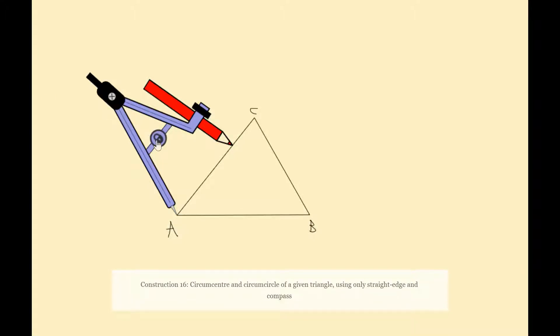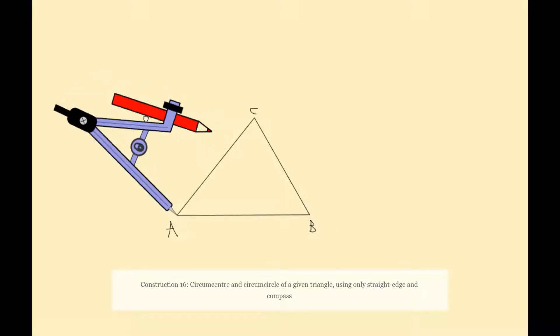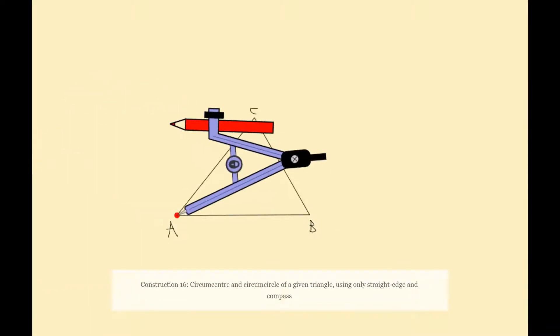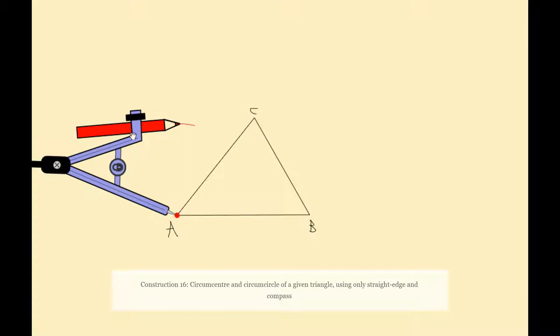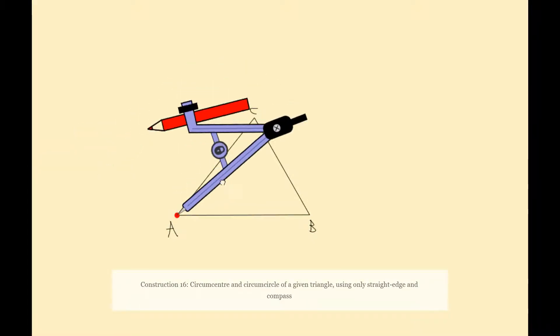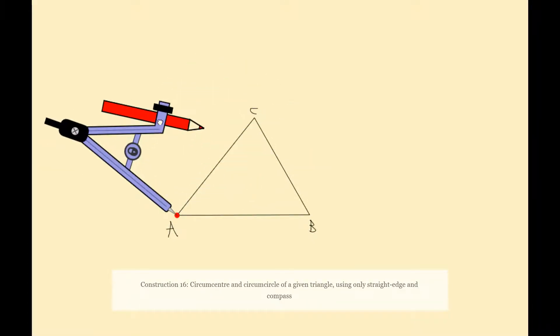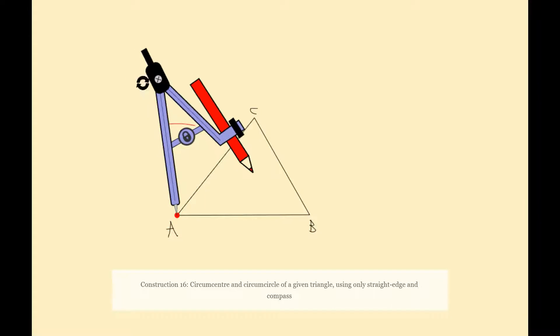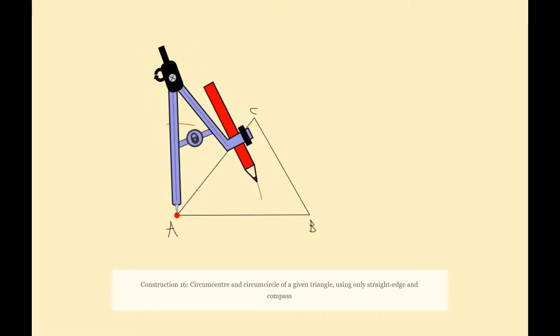And I'm then going to construct an arc. So I'm just going to construct an arc on both sides of the line. And then I'm going to come inside my triangle here and I'm going to construct my arc.